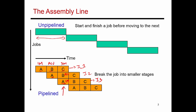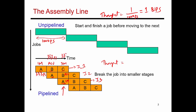Looking at how long it takes to get a task done: in the single-cycle case, it maybe took 1,000 picoseconds to finish one instruction, so throughput was one instruction every 1,000 picoseconds, which is basically 1 billion instructions per second. In the pipelined case, throughput is going to be 3x higher. Each of these stages takes roughly 333 picoseconds, and so the gap between consecutive instructions finishing is 333 picoseconds, giving a throughput of 3 billion instructions per second — a 3x increase.